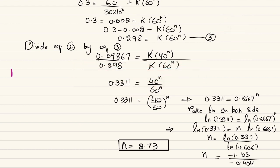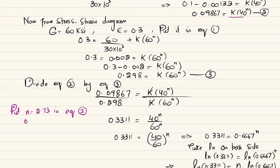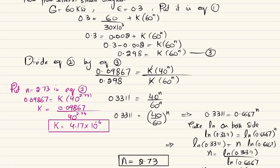Now we substitute N = 2.73 into equation 2: 0.09867 = K × 40^2.73. Solving for K: K = 0.09867 / 40^2.73, which gives K = 4.17 × 10⁻⁶.